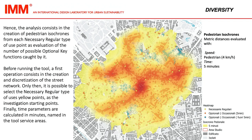The analysis consists in the creation of pedestrian isochrons from each necessary regular type-of-use point, as an evaluation of the number of possible optional key functions caught by it. Before running the tool, a first operation consists in the creation and discretization of the street network.